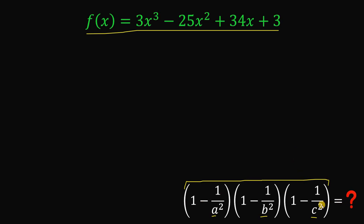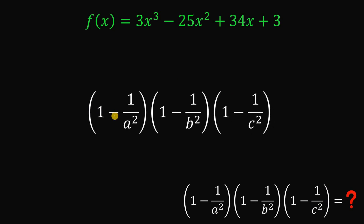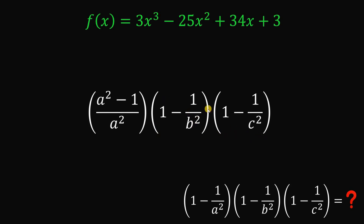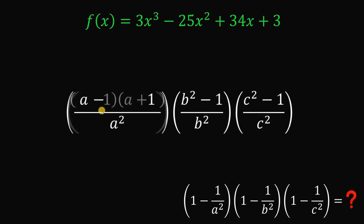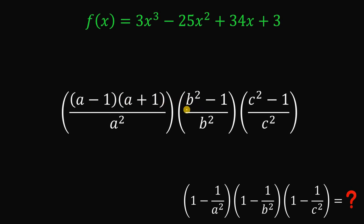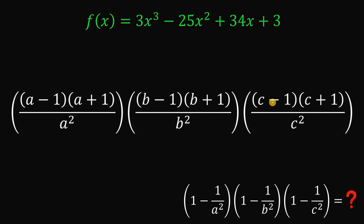First, we simplify the expression. Take note: (1 - 1/a²) can be rewritten as (a² - 1)/a². Similarly, we get (b² - 1)/b² and (c² - 1)/c². Now, since 1 is also 1 squared, each numerator is a difference of two squares. So a² - 1 factors as (a - 1)(a + 1), b² - 1 factors as (b - 1)(b + 1), and c² - 1 factors as (c - 1)(c + 1).